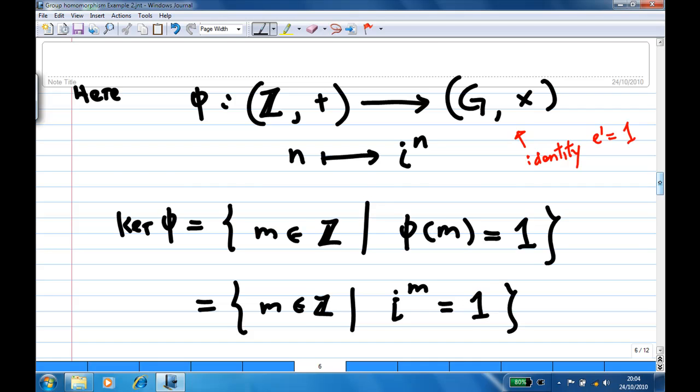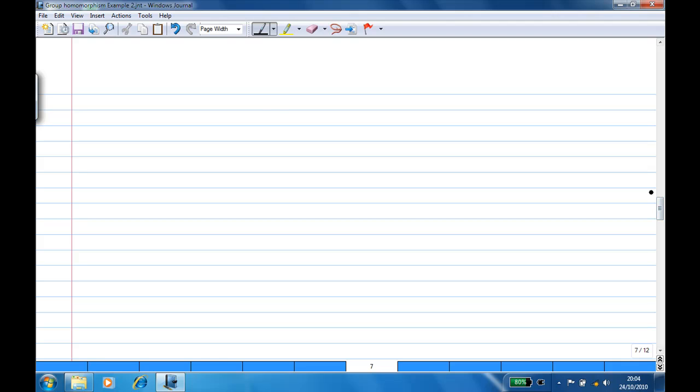Now let's do some rough work here. When i^m = 1, we know i^0 = 1, i^1 = i, i² = i·i = -1, and i³ = i²·i = -1·i = -i.